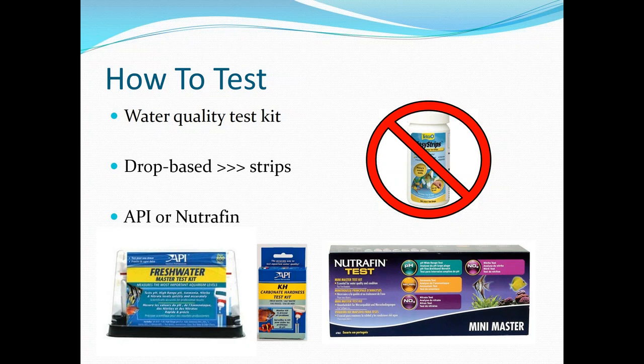You want to make sure that your kit has a range of nitrogen parameters — ammonia, nitrite, nitrate — and pH. They also have a KH test kit. Depending on where you're located, your GH or hardness might be off the scale already, so it's not really something you'll need to test for on a regular basis.